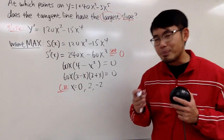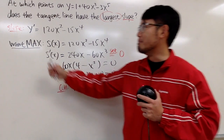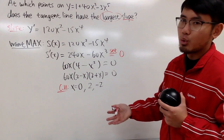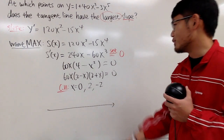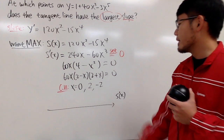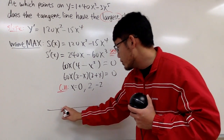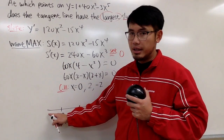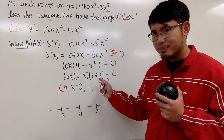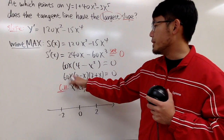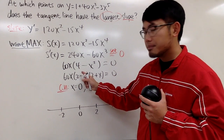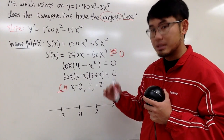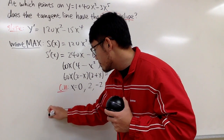This is not easy anymore — you have to pay attention to which one gives the maximum. Let's do the first derivative test using a sign chart for S'. The critical numbers in order are -2, 0, and 2. For a number less than -2, let's try -20: 60(-20) is negative, (2 - (-20)) = 22 is positive, (2 + (-20)) = -18 is negative. Negative times positive times negative gives positive, so S' is positive on this interval.